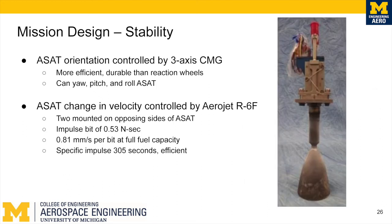For stability, the ASAT is kept stable by a three-axis control moment gyro — three perpendicular wheels mounted to a gimbal, spinning at very high speeds — so when they are rotated, the ASAT changes orientation. It is more efficient and durable than reaction wheels because they don't have to speed up and slow down; they stay at the same rotational velocity and require less power. The ASATs can translate to chase targets using two one-kilogram Aerojet R6F reaction control thrusters mounted at the center of mass. With a 0.53 newton-second impulse bit, they can propel the ASAT with very fine delta-V changes of about 0.81 millimeters per second. A specific impulse of 305 seconds ensures they won't use large amounts of fuel for these fine maneuvers.